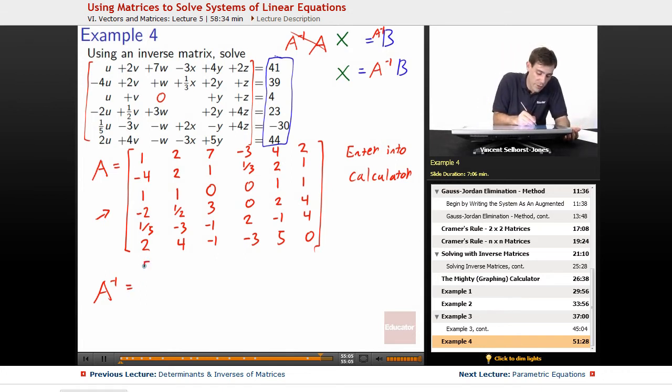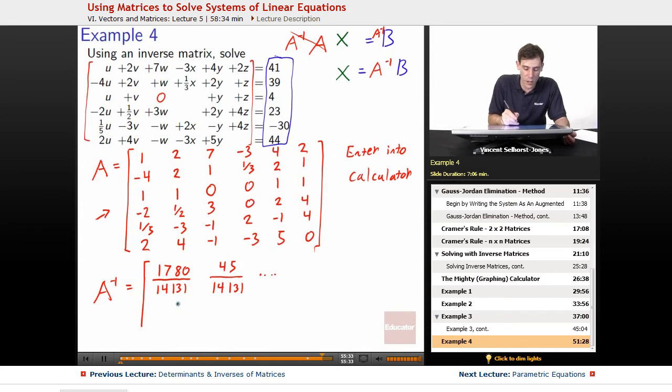Now we punch out A inverse. So on most calculators, that's going to wind up being take the matrix, raise it to the negative one. What does it come out to be? It comes out to be sinfully ugly. It is awful. For example, the very first term is going to be 1,780 divided by 14,131. The second column, first row, first row, second column would be 45 divided by 14,131. The third, oh yeah, this is awful.